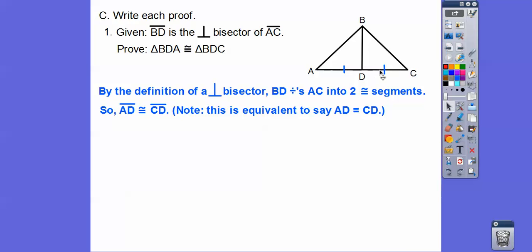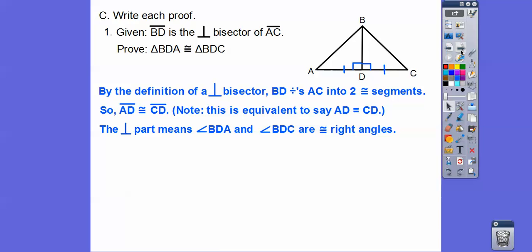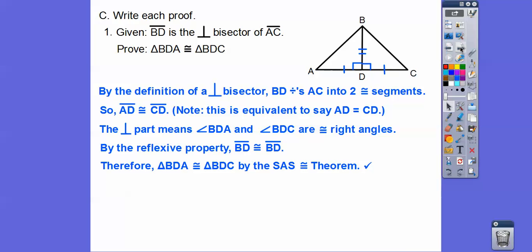Make sure you mark that figure. Since BD is perpendicular, that means there are congruent right angles on both sides — right angles are congruent, so we mark them. The perpendicular part gives us congruent right angles. Then by the reflexive property, side BD equals itself — whenever two triangles share a side, use the reflexive property; it's one of the most used properties in geometry. Now I can see side, angle, side on both triangles, so they are congruent by Side-Angle-Side.